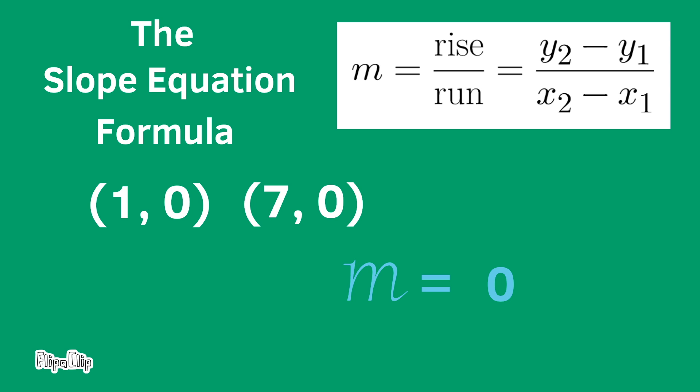But remember, you can save a lot of time when you recognize that both ordered pairs have the y value of 0. This always means that the line has zero slope.